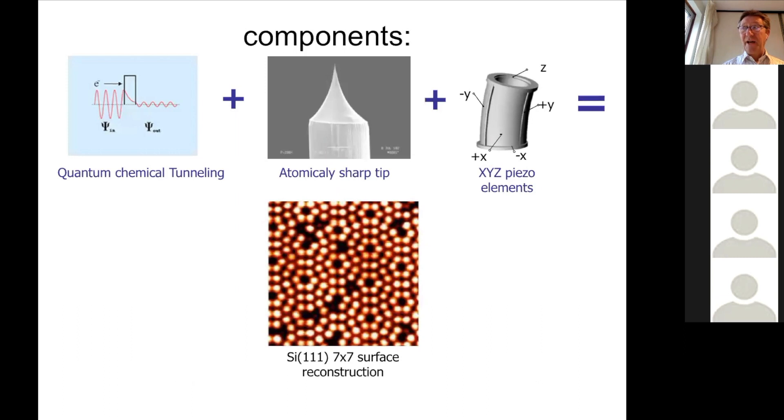Scanning tunneling microscopy is the first technique, and basically it is a combination of tunneling, quantum chemical tunneling that you know from quantum mechanics, together with a very sharp tip that is atomically sharp and piezo elements.